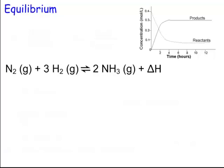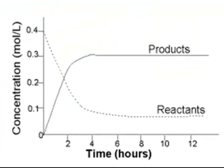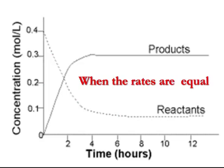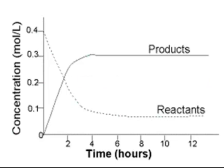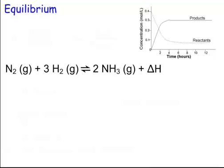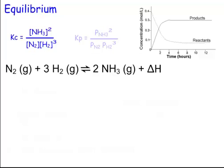Let's take a look at equilibrium. If you see in the upper right-hand corner, that's a graph for an equilibrium. We know we are at equilibrium when the rates of the forward reaction and the rates of the backward reaction are the same and constant. We're going to take a look at the production of ammonia — it's an exothermic reaction. For Kc, products go on top in brackets with coefficients as exponents, and reactants go on the bottom. We can also do Kp, which is the same thing, except use partial pressures for Kp.